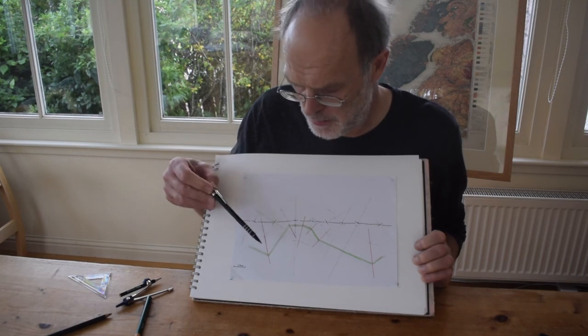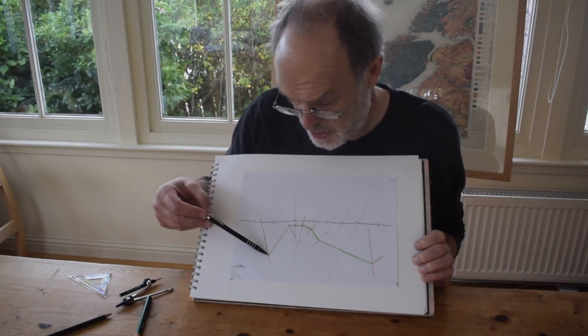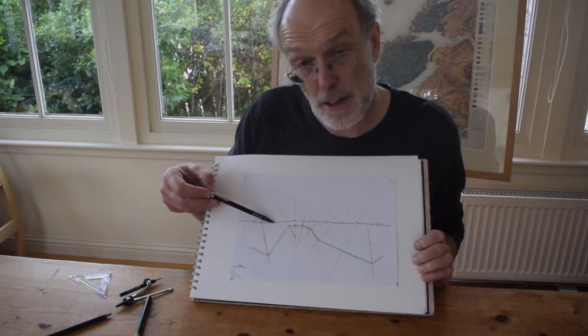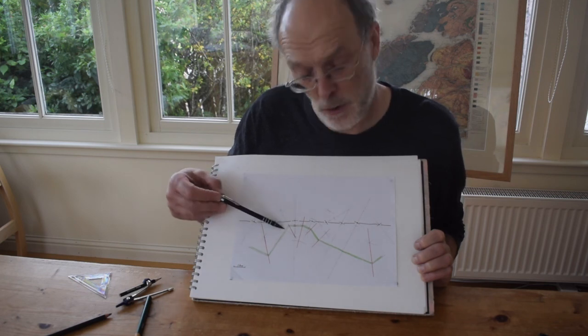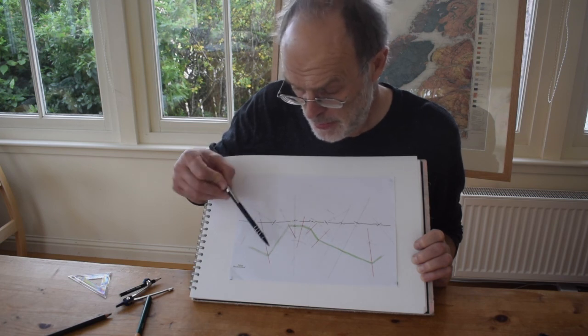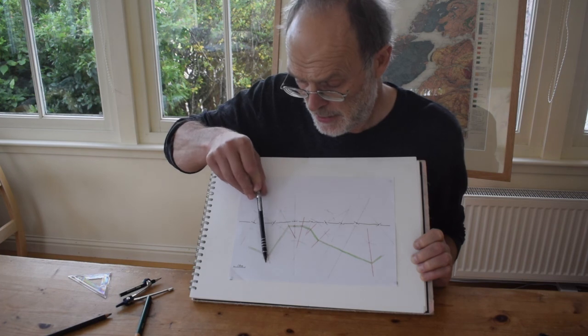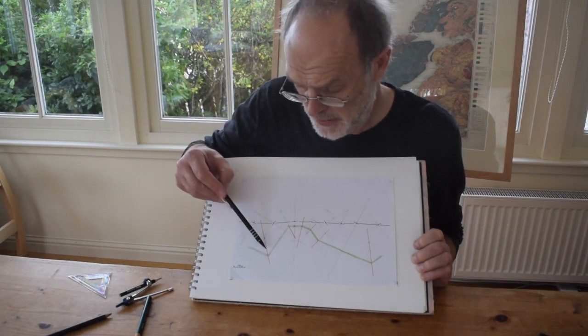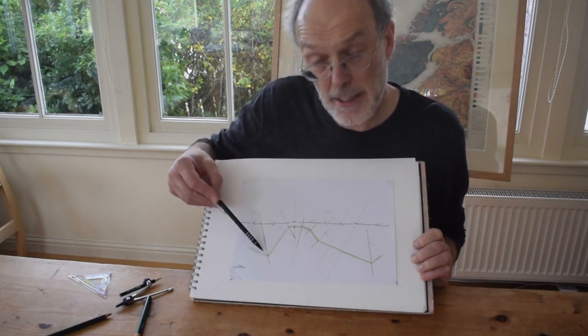So this is the result of us applying the kink band method to create our cross section. It works because of the assumption that fold limbs are essentially planar structures within which we can use a single bedding reading to define the continuity of a dip panel, which exists between one axial surface, one hinge if you like, and another, which are places of abrupt angular change. These are mirror planes so that the axial surfaces bisect the interlimb angle. So that's the technique we've used.